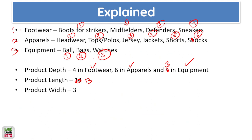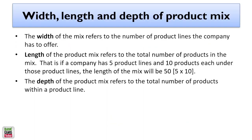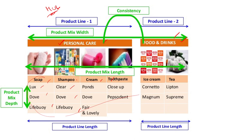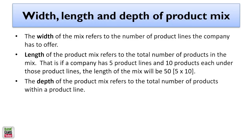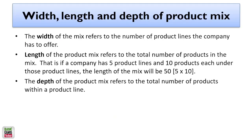To summarize: product width is the number of product lines — 3 in the footwear example; product length is the sum of all products — 13 in total; product depth is the number of variants per line — 4 in footwear, 6 in apparel, 3 in equipment. The number of product lines a company carries is called product mix width. For HUL, personal care is one product line and food and drinks is another, making the product mix width 2.